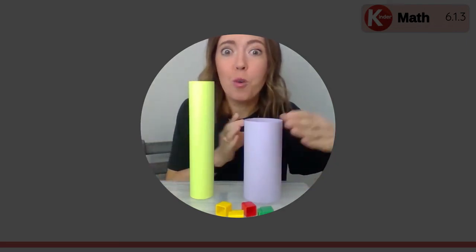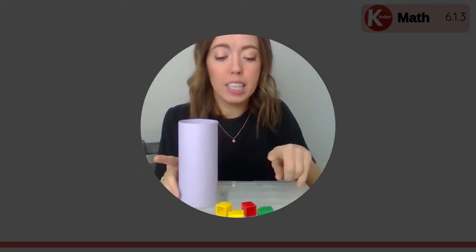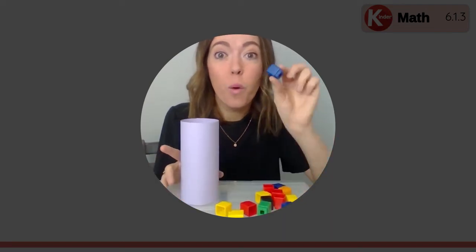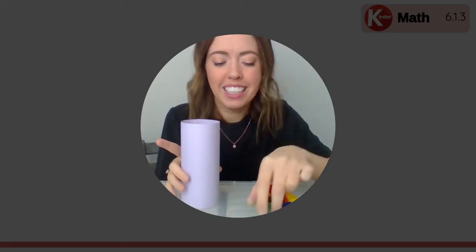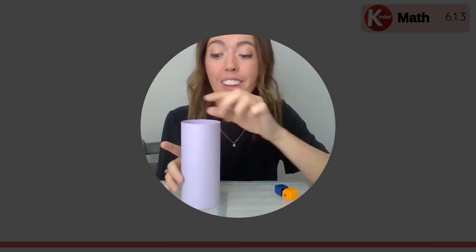Which cylinder do you think will hold more unifix cubes? This one's more round, but this one's taller. Let's find out. Let's do our purple cylinder first. Will you count with me as we put one cube in here at a time? We're going to need some more cubes. Okay, here we go: one, two, three, four, five, six, seven, eight, nine, ten, eleven, twelve, thirteen, fourteen.